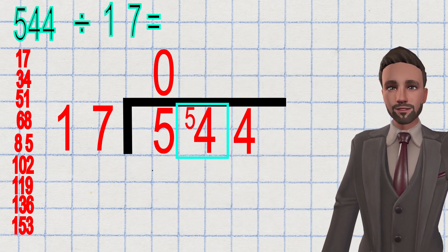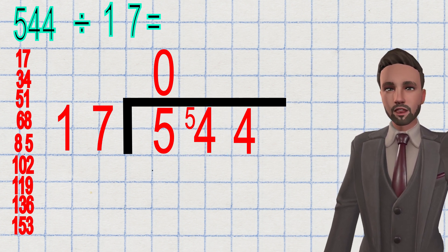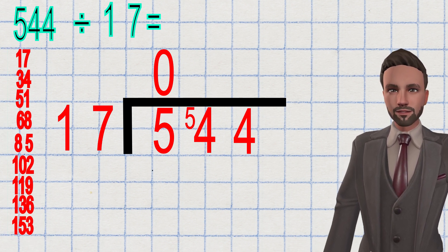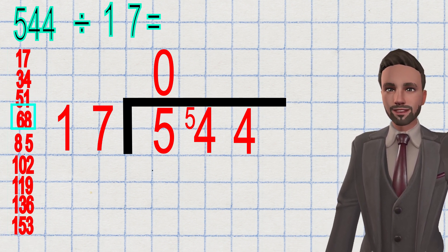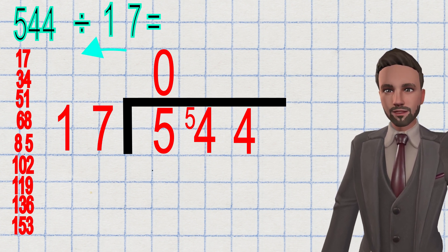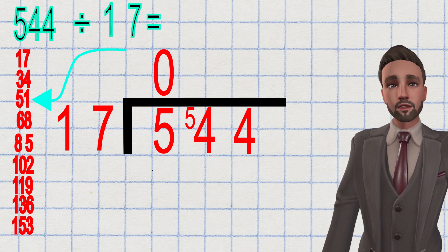Now I have 54. How many times does 17 go into 54? What I do is see how close I can get to 54 in my multiples without going past it. I can see 51 and 68. Well, 68 has gone past it, so it must be 51, which is one, two, three—three times 17.